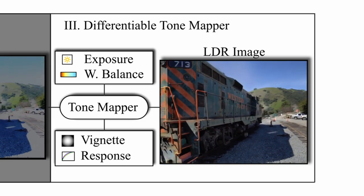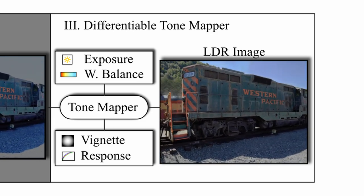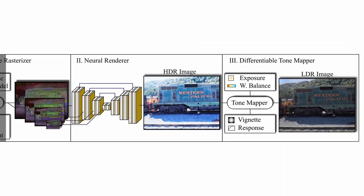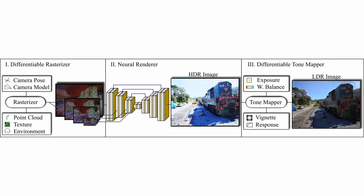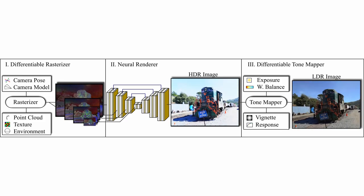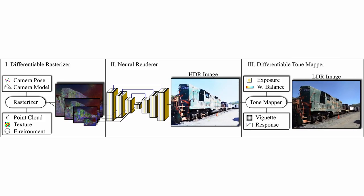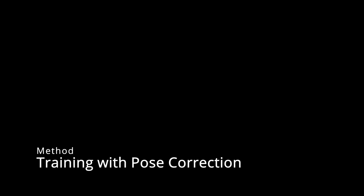During training, the physical parameters of the tone mapper are estimated — for example, the camera response function and the per-image exposure value.